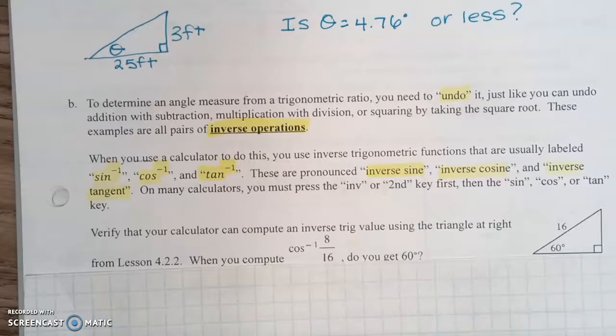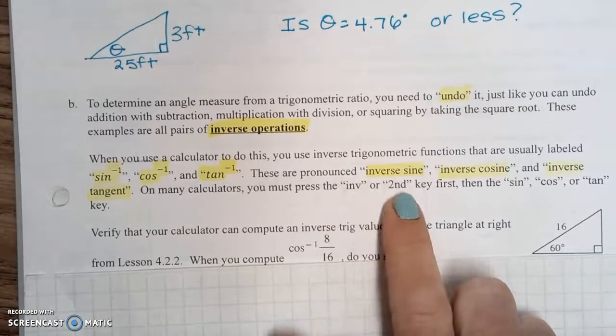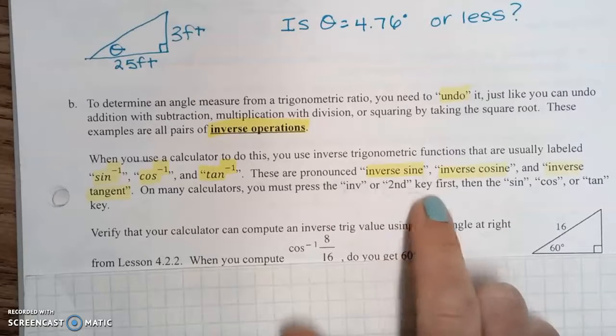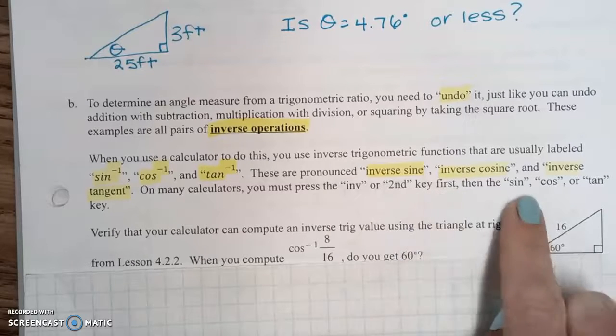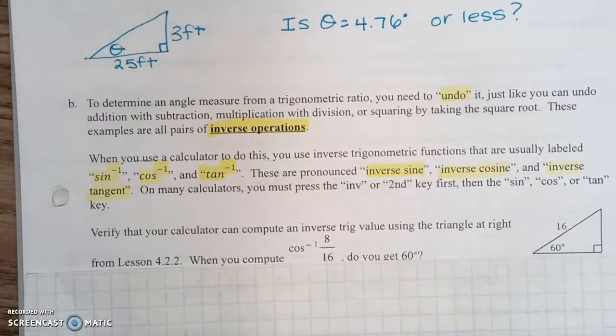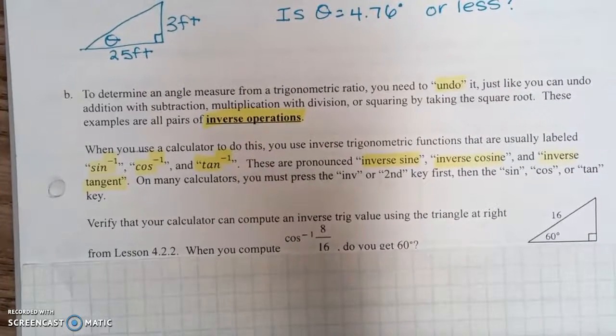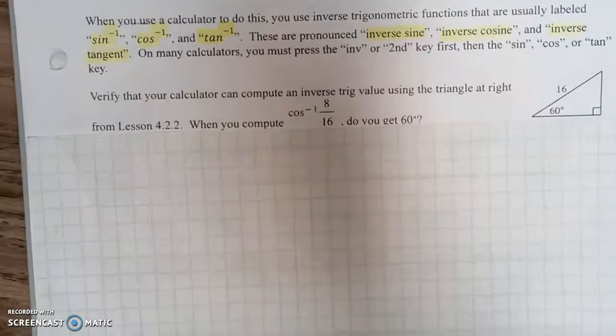When you use the calculator to do this, you use inverse trigonometric functions that are usually labeled inverse sine, inverse cosine, inverse tangent. On many calculators, you must press the inverse or the second key first, then the sine, cosine, or tangent. It just depends on what brand of calculator you have.